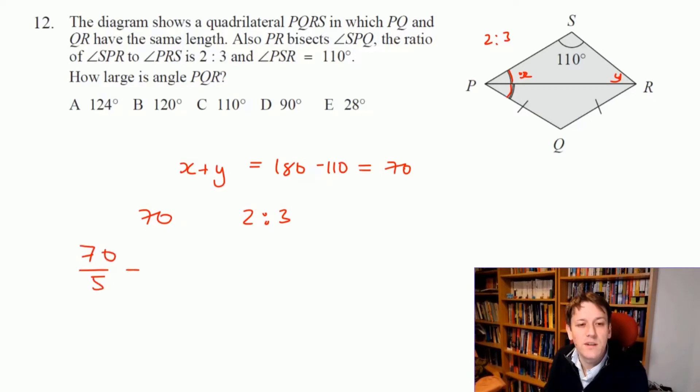So two parts is 2 times 14, which is 28, and three parts is 3 times 14, which is 42. So that means that these two angles here are actually 28 and 42.